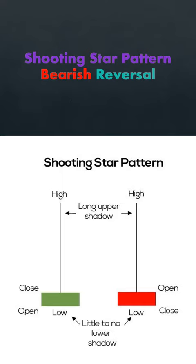Shooting star pattern — bearish reversal. What you see is that the market will open at a high, but bears will push the price down. So what you see is a very small body but a very high wick. If this happens in an uptrend, the market will be ready to go down. If it happens in a bear market, the market is ready to go up.